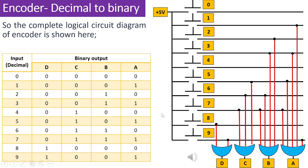We can now see the complete logical circuit diagram of a decimal-to-binary encoder. In this diagram we have OR logic gates, each having output denoted by A, B, C and D.